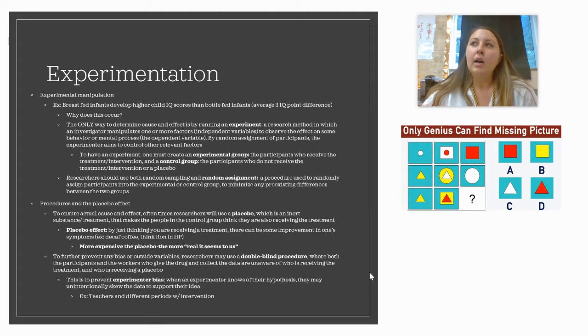A very important thing in administering an experiment is to try to eliminate as many variables as possible. We want to ensure actual cause and effect. Oftentimes, researchers will use what we call a placebo, which is an inert substance or treatment that makes the people in the control group think they're also receiving the treatment. Let's say I want to study the effects of this new drug on anxiety reduction. In my experimental group, I'm going to give them the actual drug. In my control group, I'm going to give them a fake drug that looks and smells and tastes exactly like the real one, but they don't know that. The reason why we do this is because there is a thing that happens among humans called the placebo effect. When we think we are receiving a treatment, we can actually improve in our behavior, in our symptoms, whatever it is that the researchers are looking for, just by believing that.